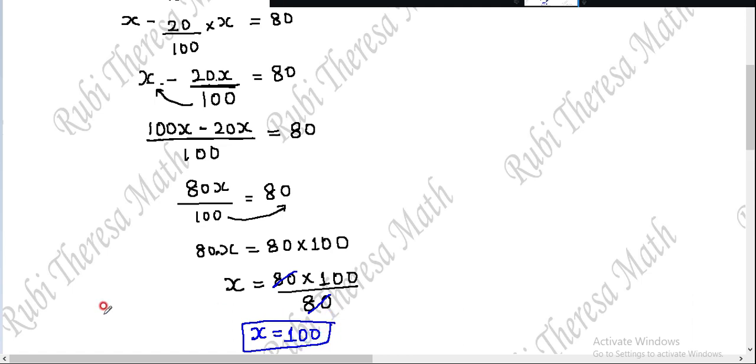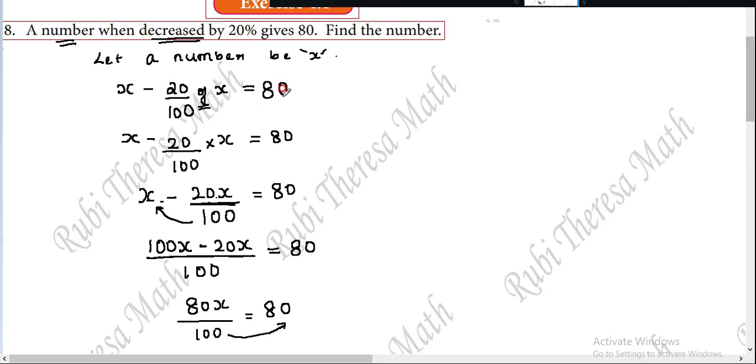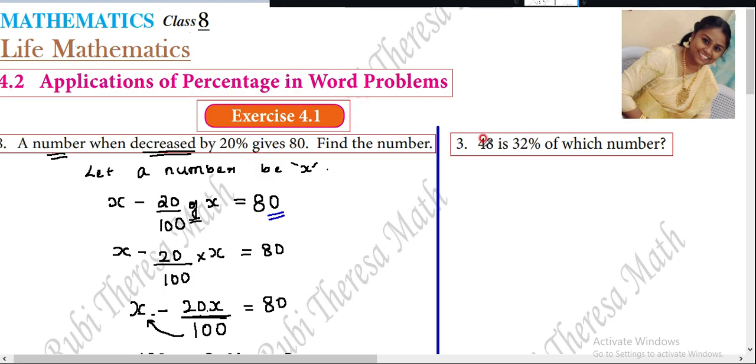So remaining, x is equal to 100. The number we found is 100. The number is 100. When this number is decreased by 20%, you will get the value 80. If you want to verify, you can check. So this is correct. Let's look at the next sum, third sum.